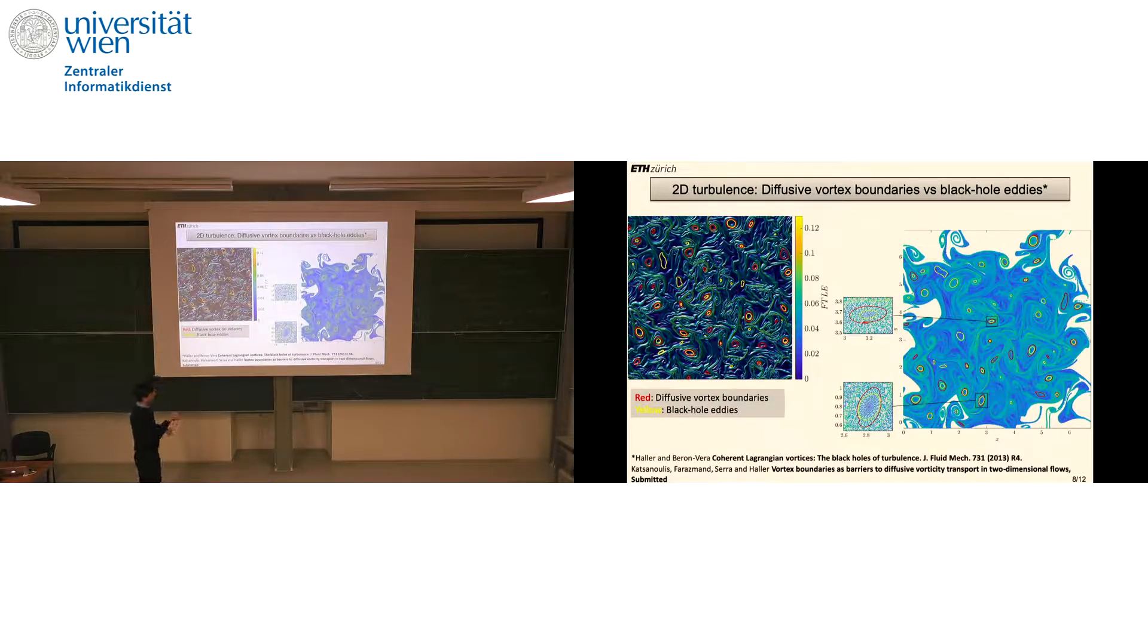This is the final snapshot of the previous movie. With red, we have the diffusive vortex boundaries; some start to filament to a smaller or larger extent. Whereas the yellow curves, the black hole eddies, remain totally unstretched. I would claim that the vast majority of vortices consist of an unstretched core, which is the black hole eddy core, and these eddies are encircled by diffusive vortex boundaries. But I'm hesitant making this claim because there's no rigorous result, and I can find some contrary examples.